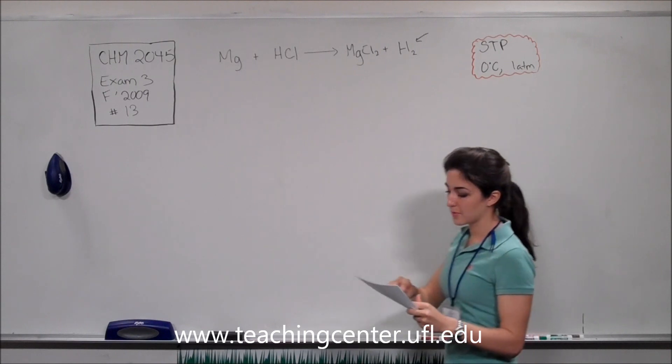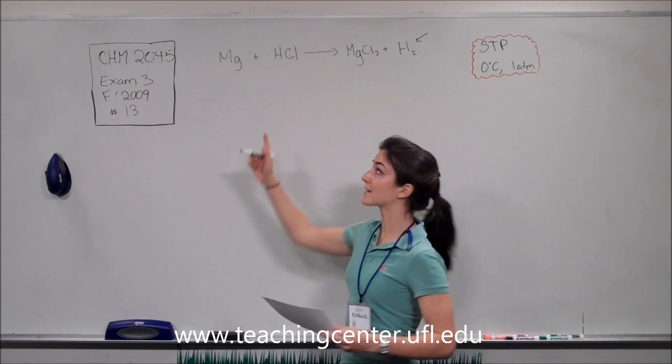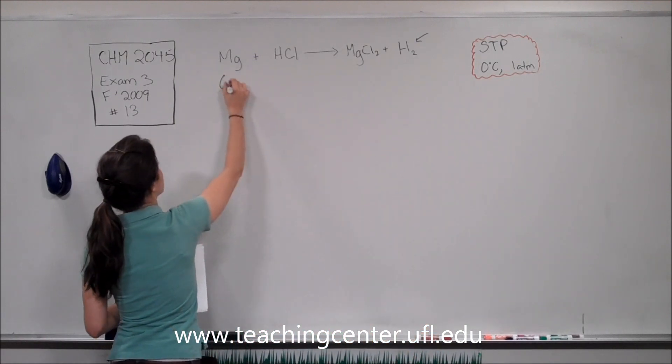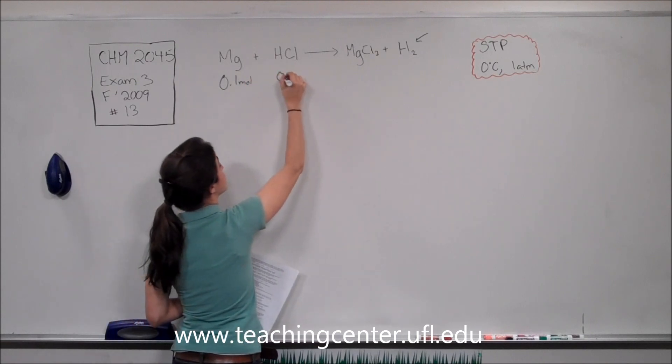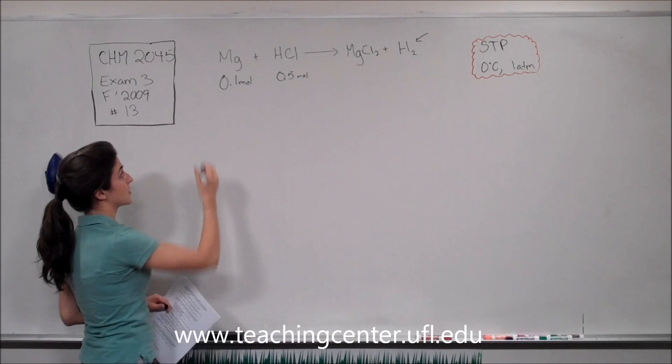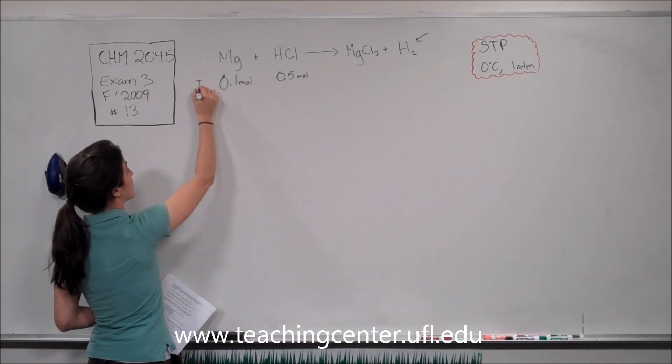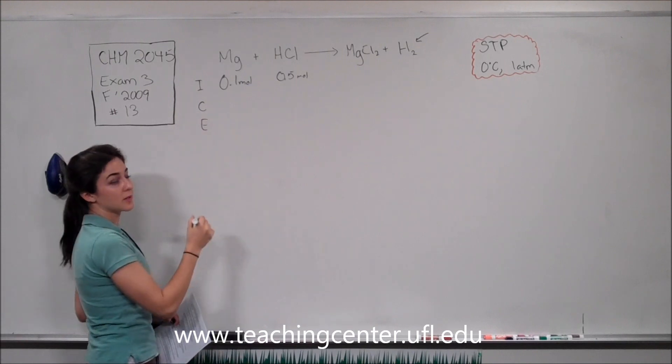So we know that we have a reaction, and they give us the initial amount of each of the reactants. So I'll put these in right here, 0.1 mole and 0.5 mole. So we can make an ICE chart. Here's the initial, the change, and the amounts at equilibrium.